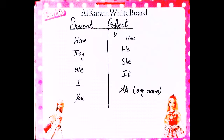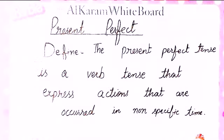Has aur have ka difference aap ko samajh aa gaya. Ab hum karte hain definitions of present perfect tense. The present perfect tense is a verb tense that expresses actions that have occurred at a non-specific time. Hum aise jumle, aise verb, aisa kaam bayan karte hain — aise action ko zahir karte hain jo kisi non-specific time mein pesh aaya ho.